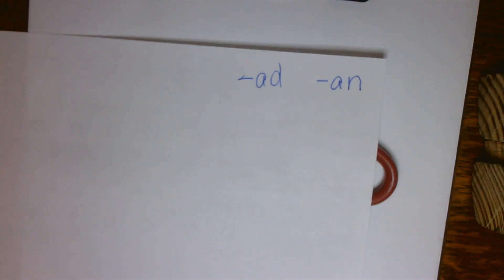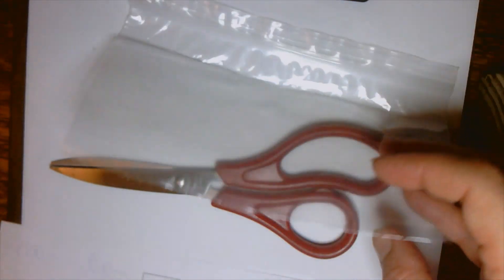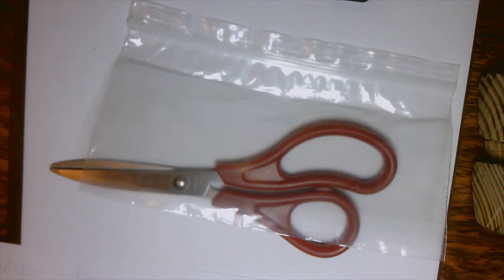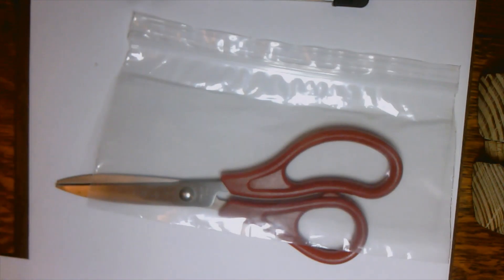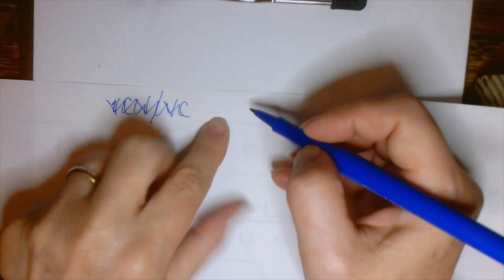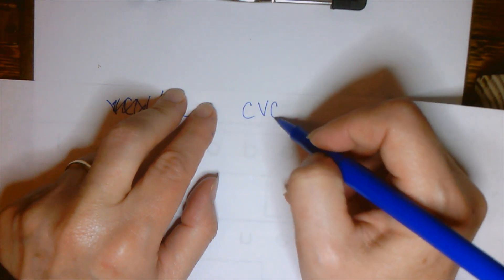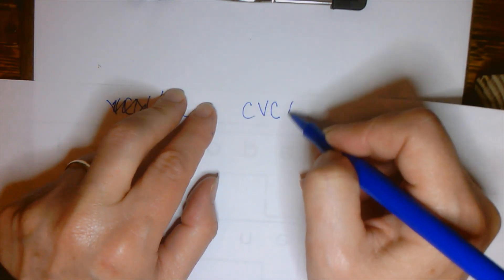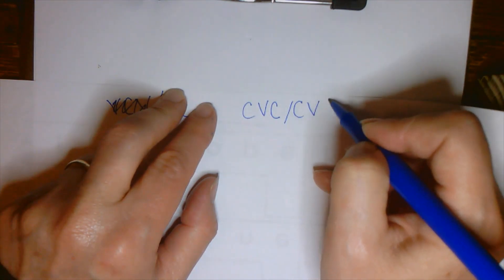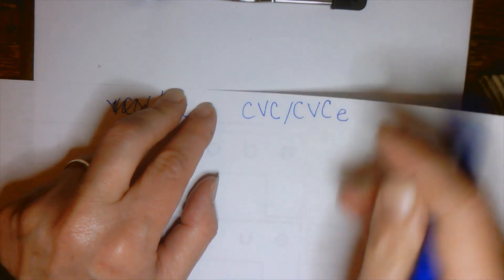First graders, you have something new today. You're also going to be working with a bag. Your bag should, instead of saying AD and AN, your bag is going to say C, V, C for consonant, vowel, consonant. C, V, C, E.